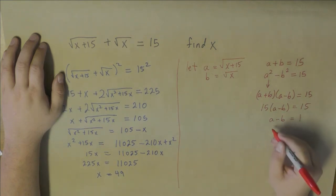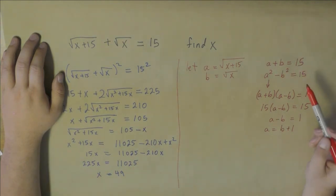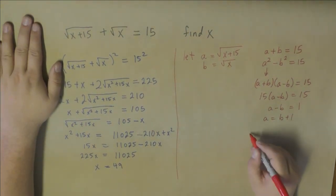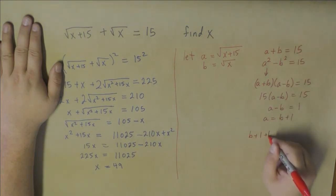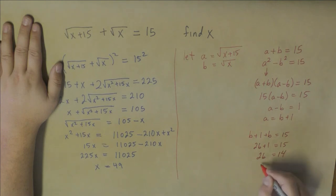And then that means that a is equal to b plus 1. Now we can go ahead and fill in for the a plus b equation. We now have b plus 1, that's a, plus b equals 15. And that gives us 2b plus 1 equals 15, which means 2b equals 14, which means b equals 7.